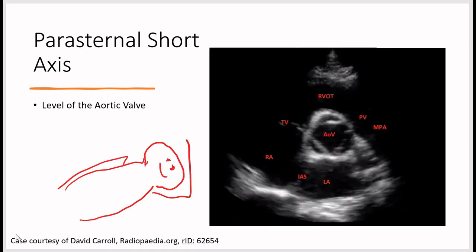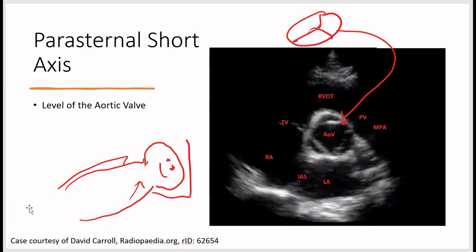For the parasternal short axis at the level of the aortic valve, drop the tail of the probe so the beam points toward the base of the heart. You'll see a Mercedes sign where the aortic valve is closed. Structures visible include the RV outflow tract, tricuspid valve, right atrium, inter-atrial septum, left atrium, pulmonary valve, and the main pulmonary artery.